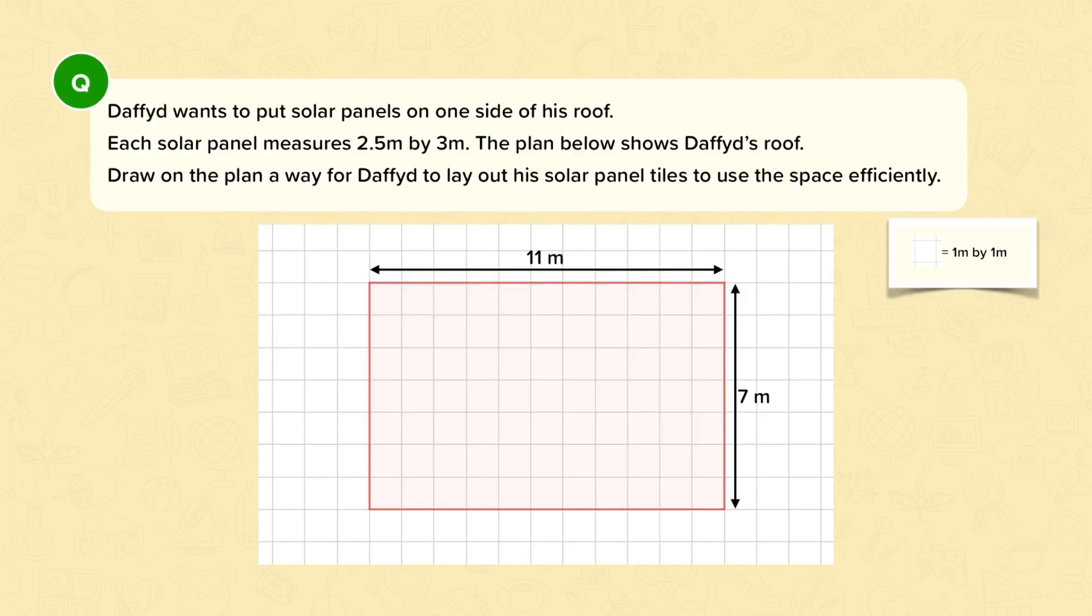Now this final question is another example that uses plan drawings. This time we have Daffyd who wants to put solar panels on one side of his roof. We're told that each solar panel measures 2.5 metres by 3 metres, and this plan below shows the roof.